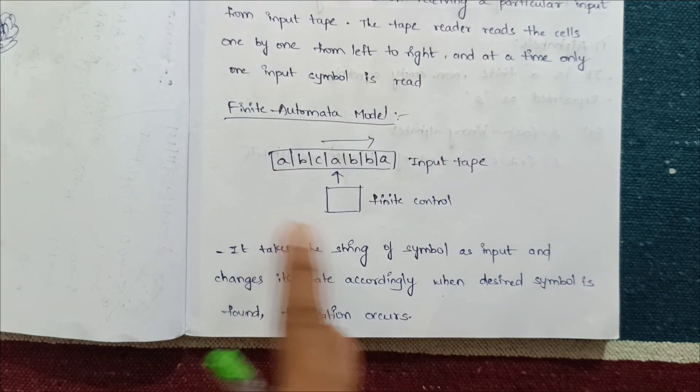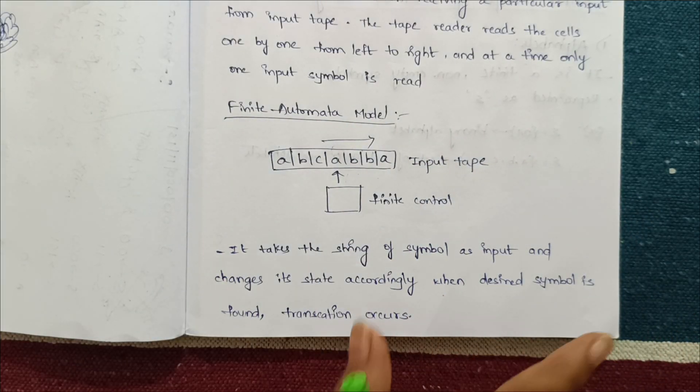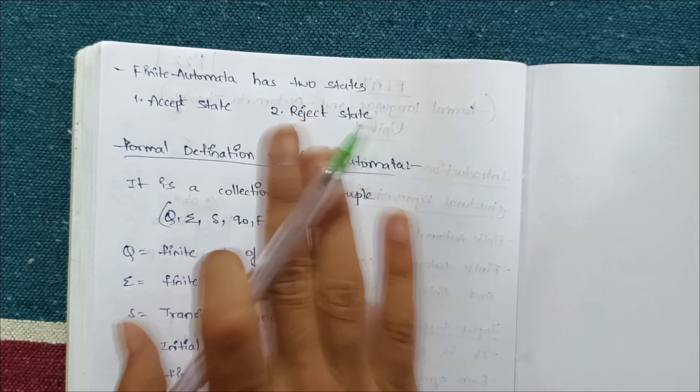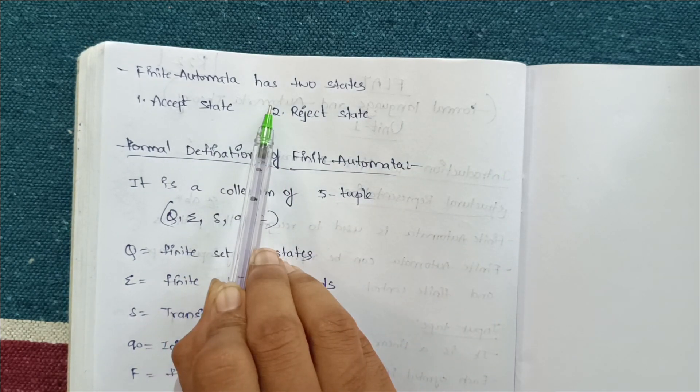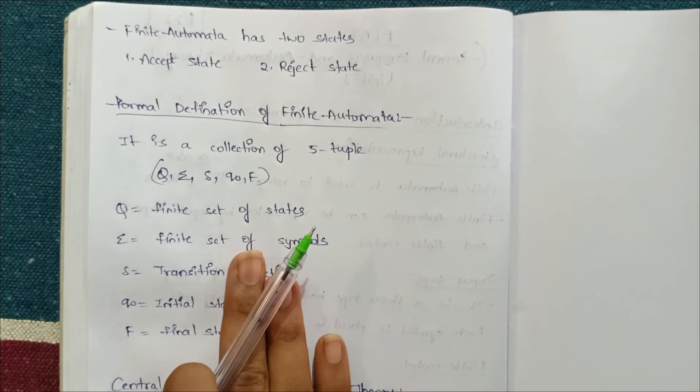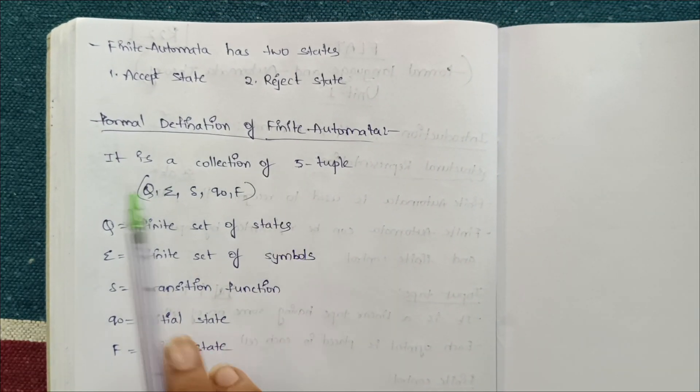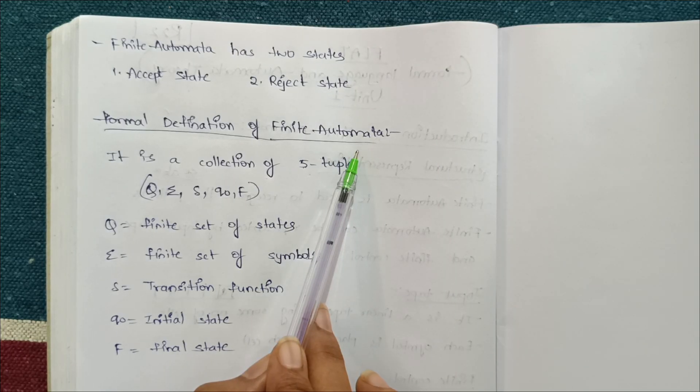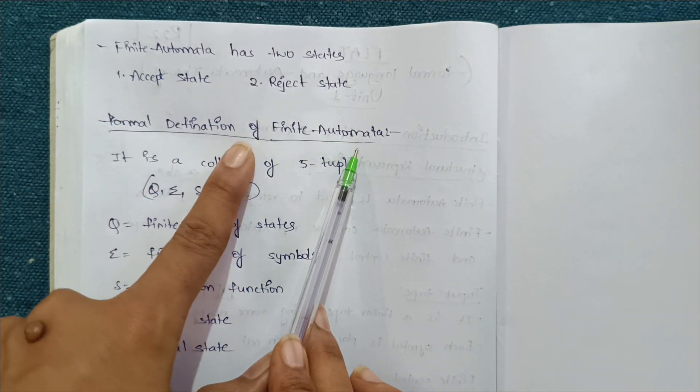This is about the finite automata. So it is a collection of five tuples. The formal definition of finite automata is: it is a collection of five tuples.